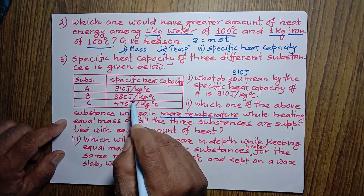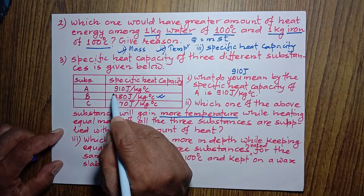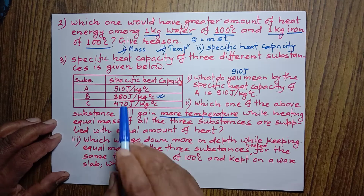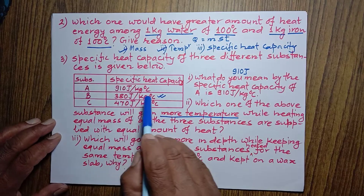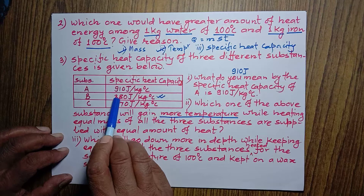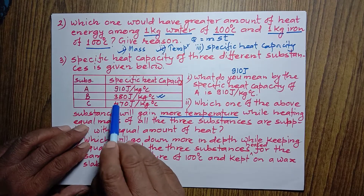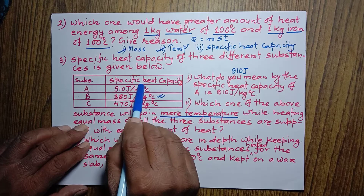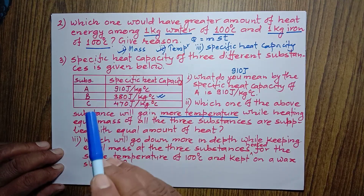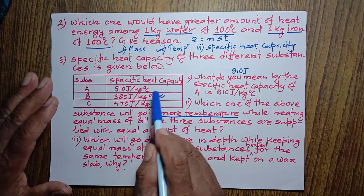You have to select the one which has the least specific heat capacity — that is B. So temperature of B will be more than that of A and C. The reason is that a substance with less specific heat capacity, even after absorbing the same amount of heat energy, has its temperature rise a lot. After every 380 joule absorbed, B's temperature rises by 1 degree Celsius, whereas C requires 470 joule and A requires 910 joule to raise temperature by 1 degree Celsius. That's why temperature of B will be greatest.